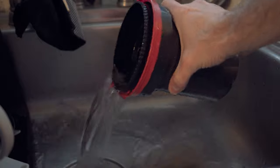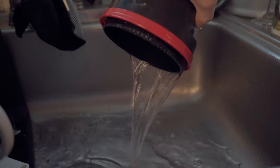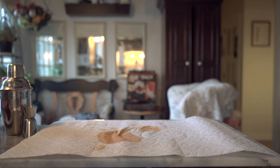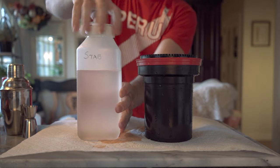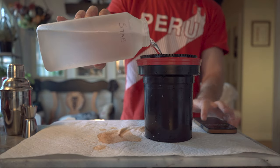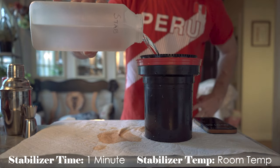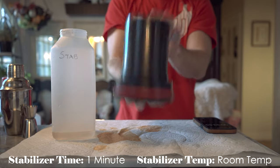Dump that water out and let's move on to the stabilizer. Some kits come with a stabilizer packet. If yours doesn't, distilled water is fine. The stabilizer goes in for one minute and you agitate for the first 15 seconds and that's it.